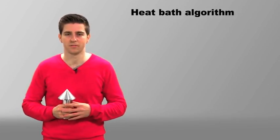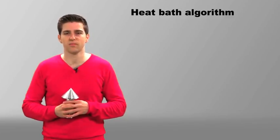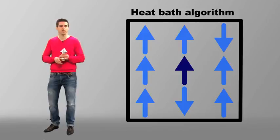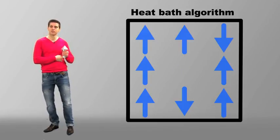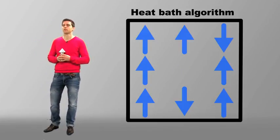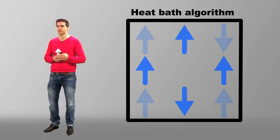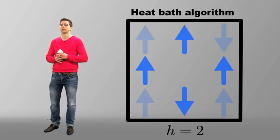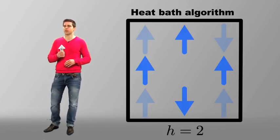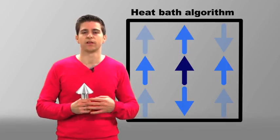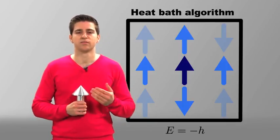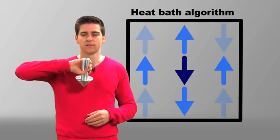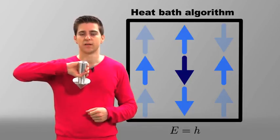So now, in the heat bath algorithm, how do we actually thermalize a subsystem, that is a spin, at temperature T? For this, we simply pull the spin out of the system and measure the field H at the now empty position. In this example, H equals 2. If we would return the spin in the state plus 1, it would have the energy E equals minus H. If instead we would return the spin in the state minus 1, we would have the energy E equals H.